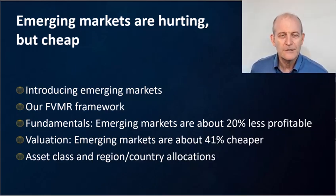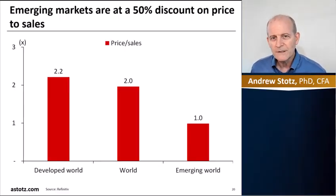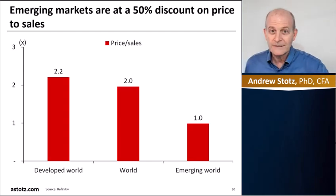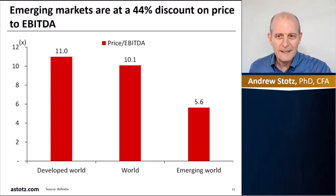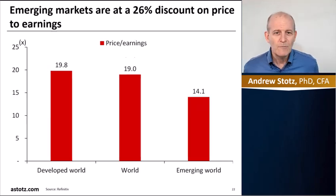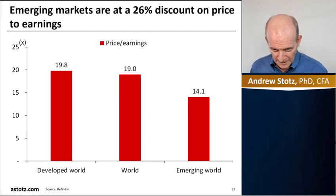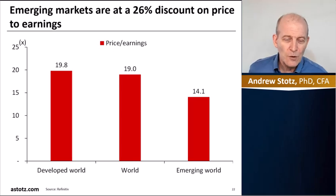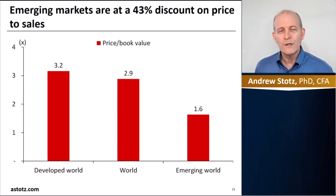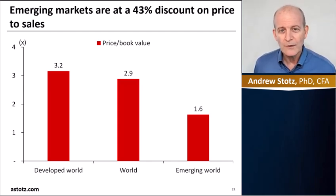Emerging markets are about 40% cheaper than developed or overall markets. On price to sales, emerging markets are at a 50% discount — the world price-to-sales ratio is about 2x, and it's 1x for the emerging world. On a price-to-EBITDA basis, they're at a 44% discount: the world is trading at 10x and the emerging world at 5.6x — an incredible discount. Price to earnings shows a 26% discount: the emerging world is trading at 14x, whereas the total world is at 19x. And price to book shows a 43% discount — the emerging world is trading at only 1.6x versus the world at 2.9x.